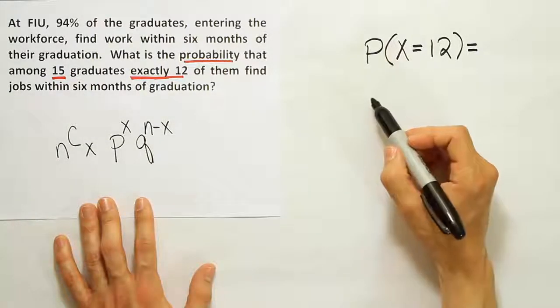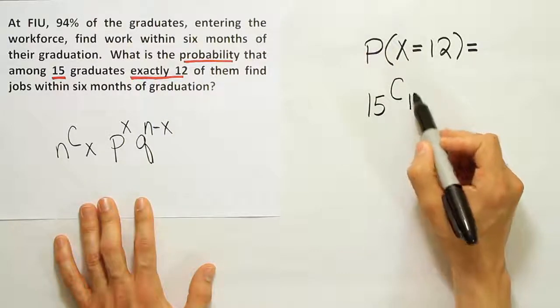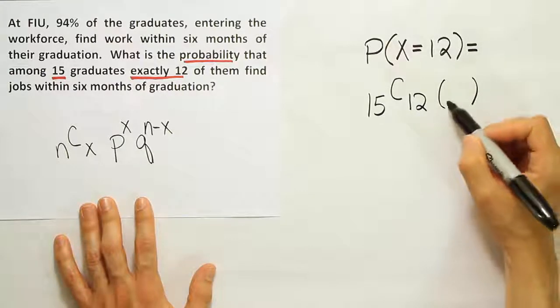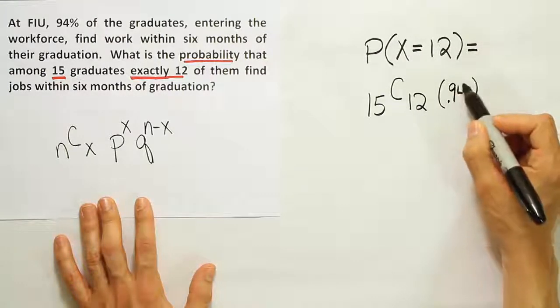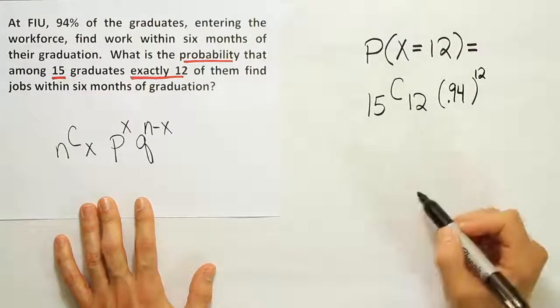So our n here is 15. There are 15 graduates being looked at. We want to choose 12 of them to be the ones who find jobs. Then we're going to have the probability someone finds a job—that'll be 94%. There'll be 12 of those people, so we'll put the 12 on the 94%.